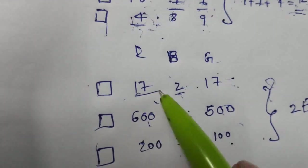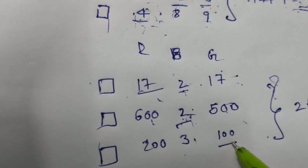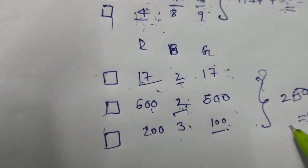Instead we can take 17, 2, and then 100 which will be less than 500. Right?